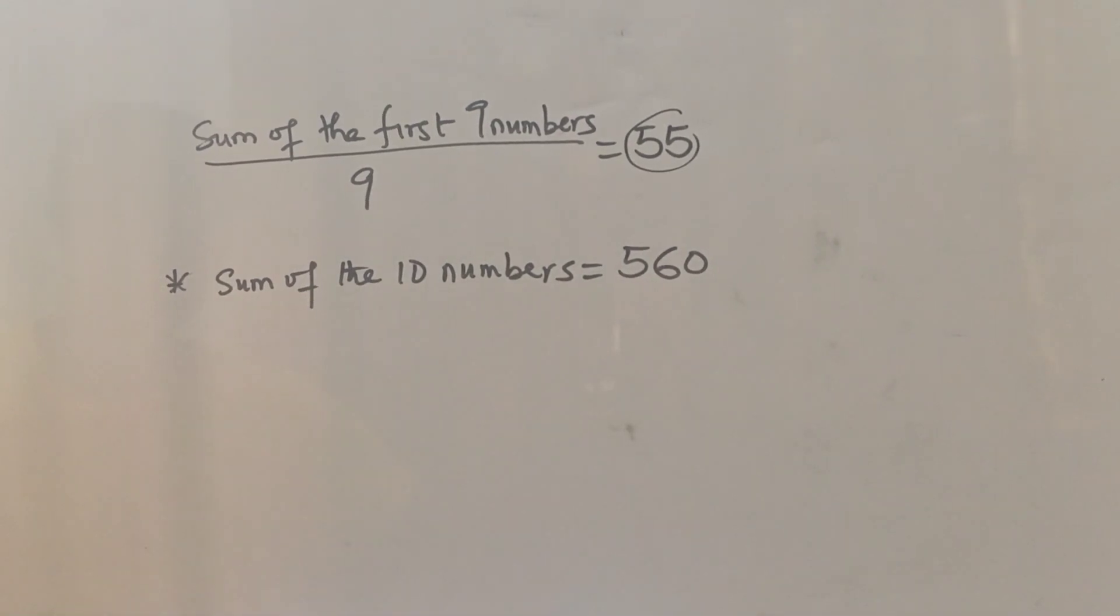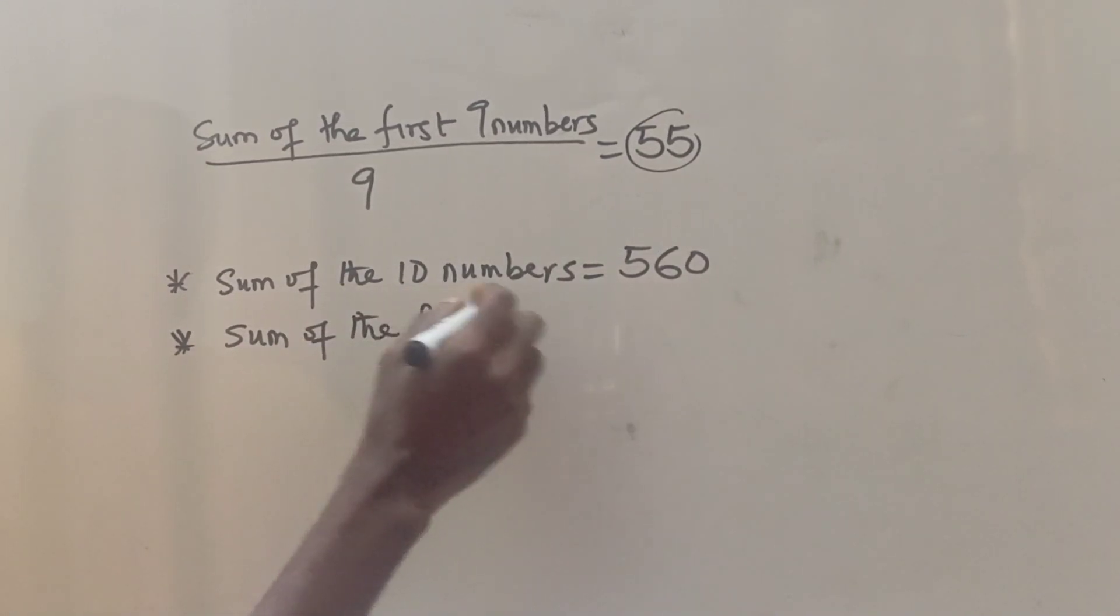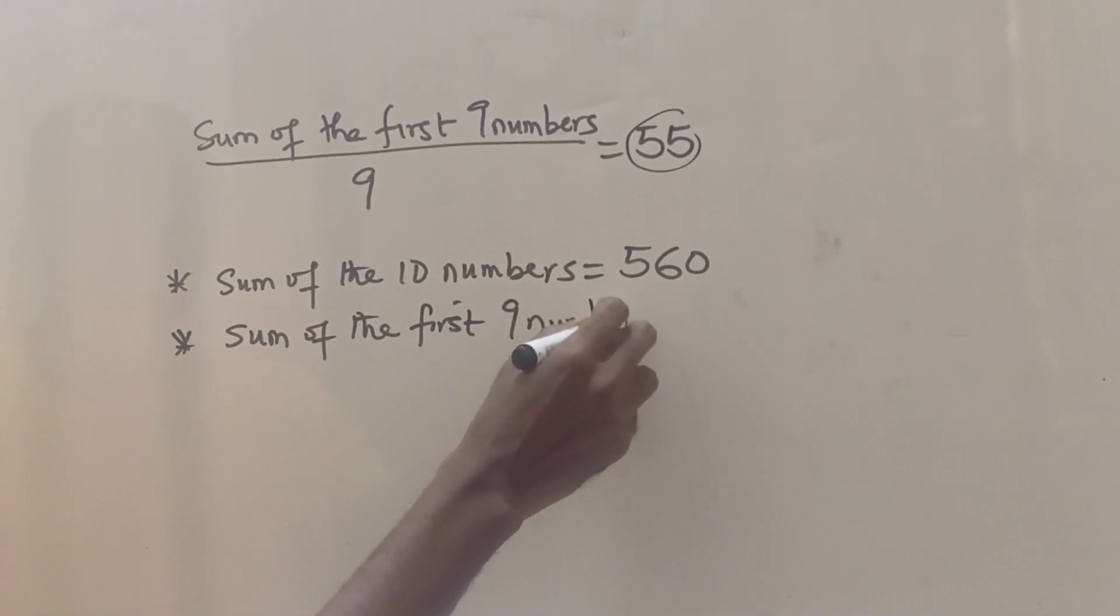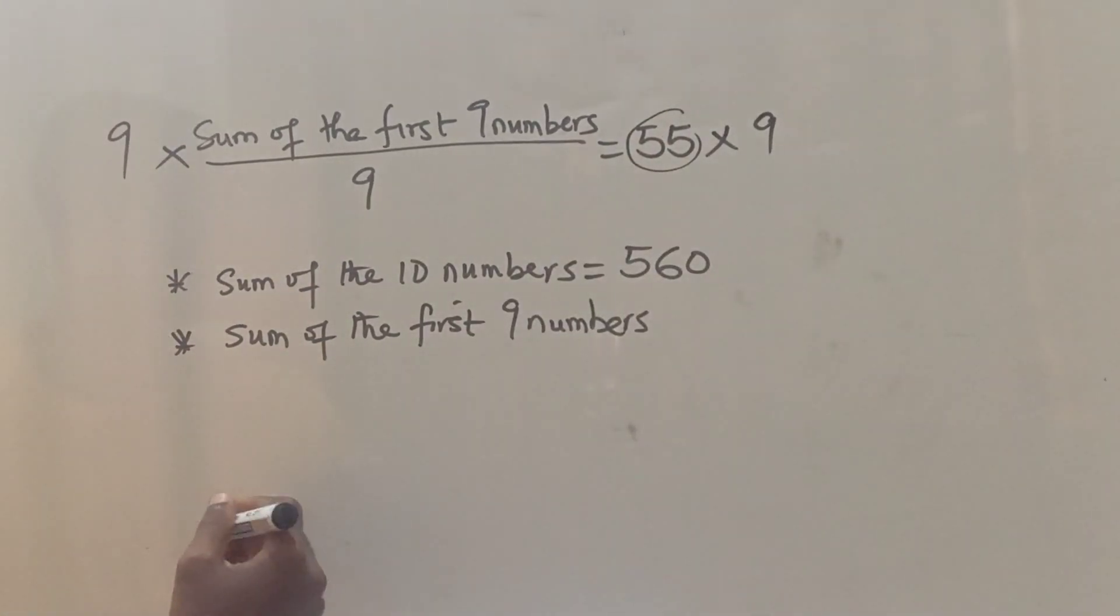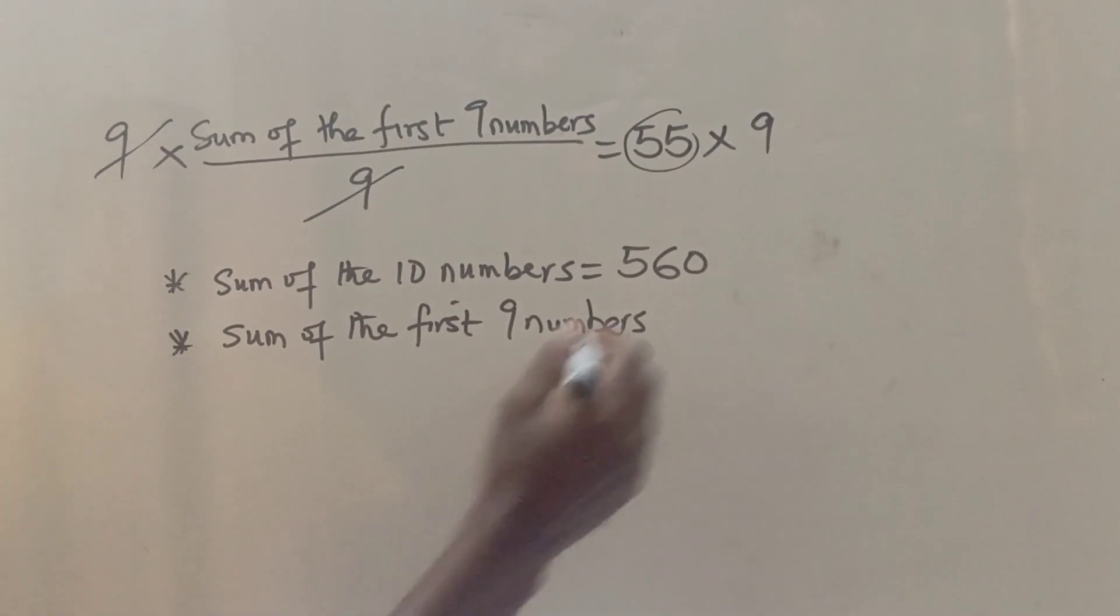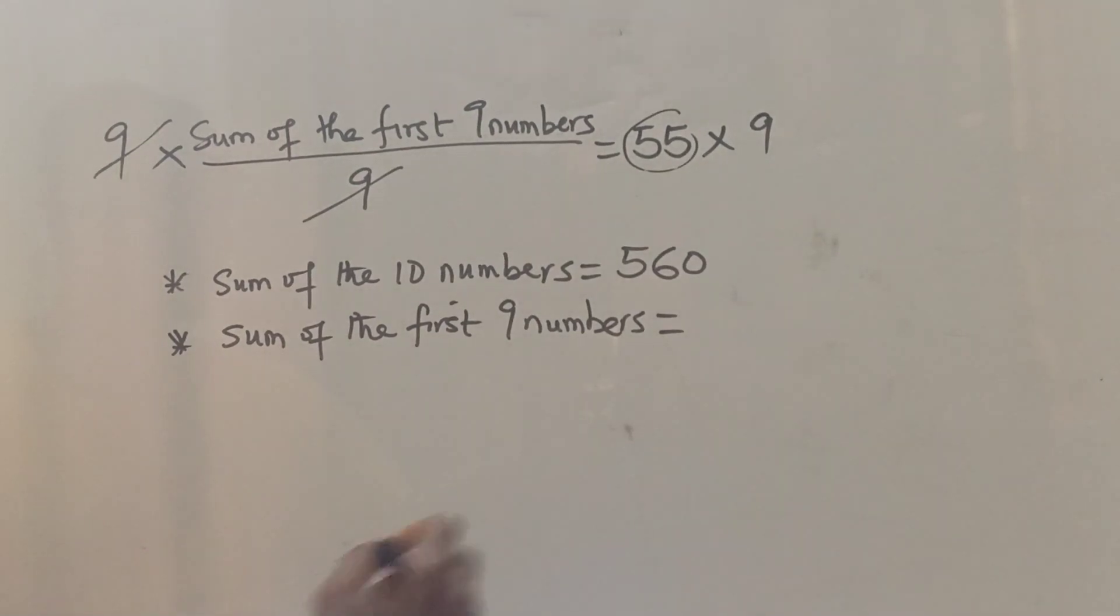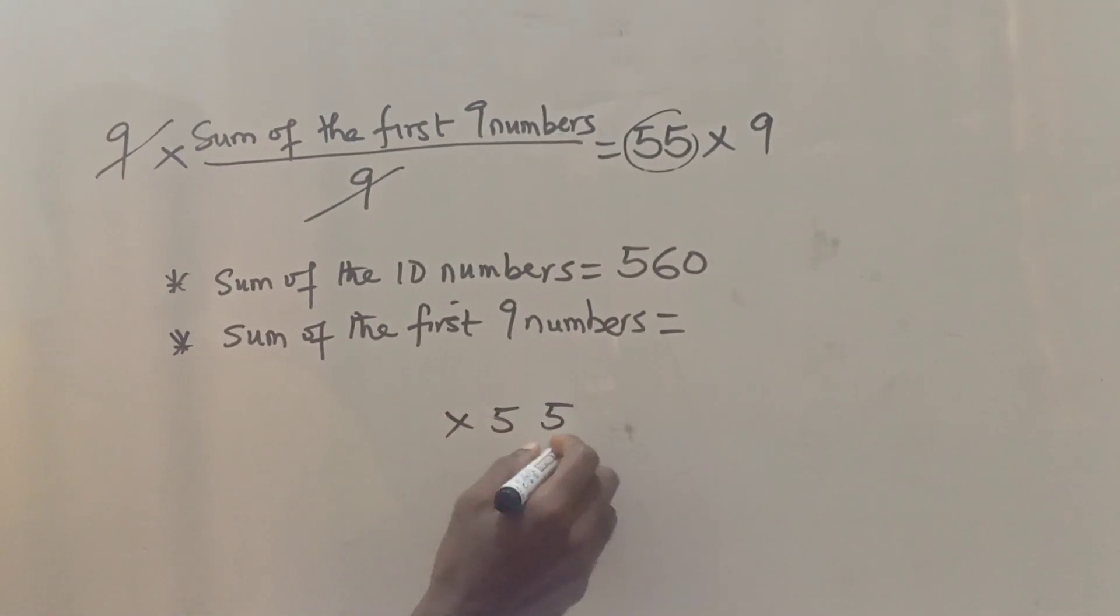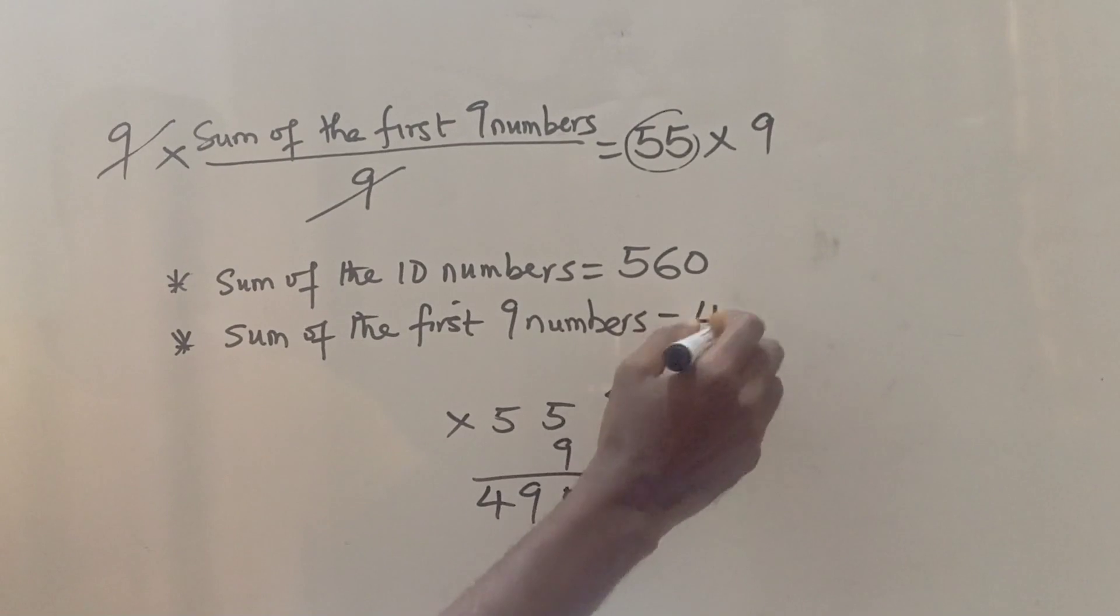Now what about the sum of the first nine numbers? So the sum of the first nine numbers... I'm going to multiply this by 9. So we'll cancel 9, and we're going to get 55 times 9. So let's quickly do that. I have 55 times 9. This will give me 9 times 5 is 45, 9 times 5 is 45 plus the 4 we have 49. So this gives us 495.